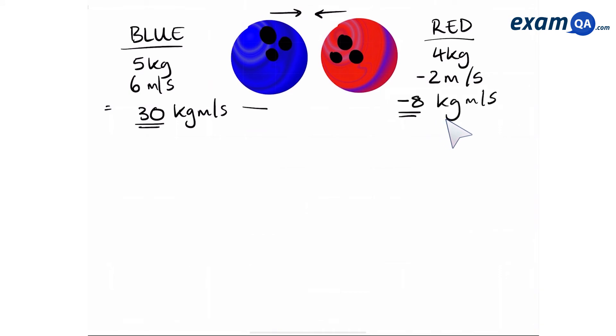So the total momentum before in the before scenario is going to be the sum of 30 and minus 8, which is 22.